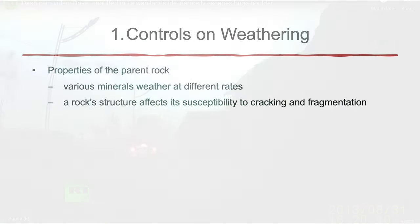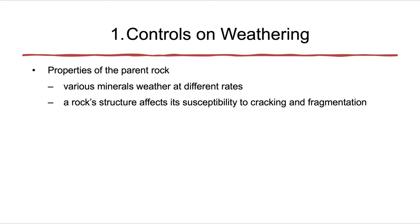What controls the rate at which a rock changes? First, it's the properties of the parent rock. Various minerals weather at different rates depending on their solubility, hardness, and size. A rock's structure affects its susceptibility to cracking and fragmentation — is the rock prone to development of joint sets? Is it prone to cracking and fragmenting because of tectonic forces?